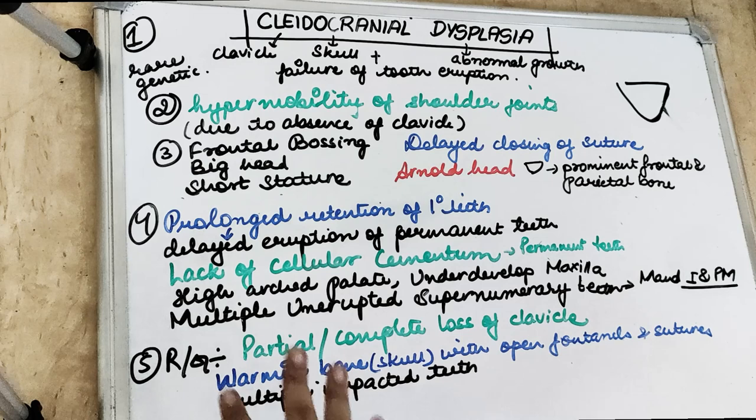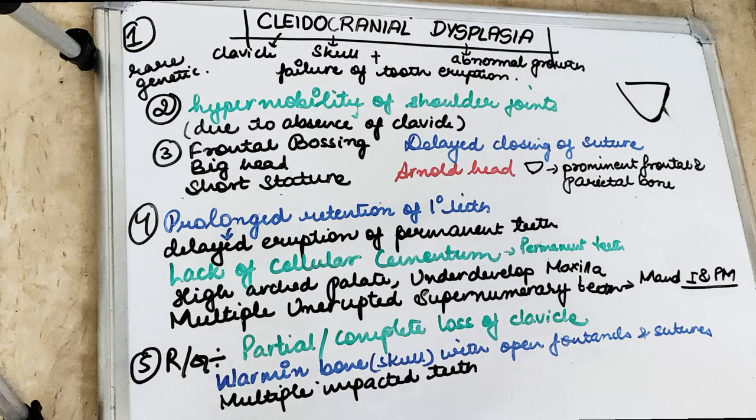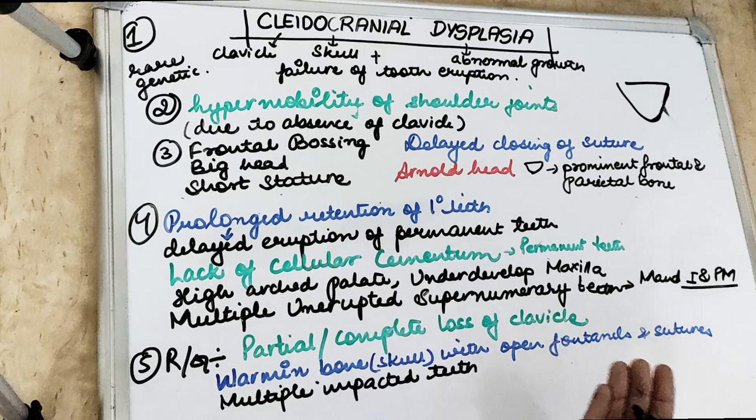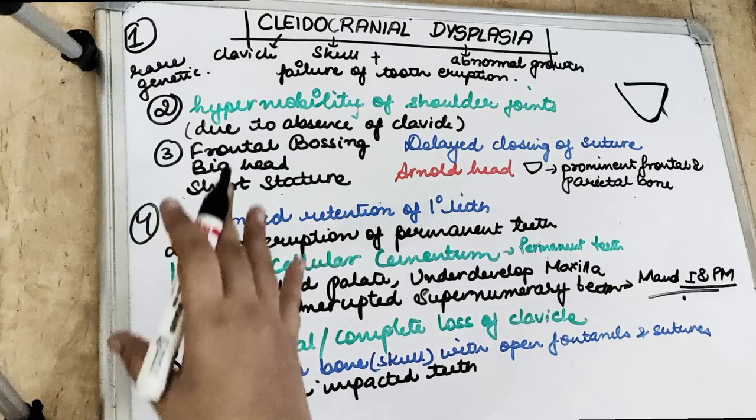The oral features include prolonged retention of primary teeth and delayed eruption of permanent teeth. The permanent teeth have lack of acellular cementum. There is a high-arched palate and underdeveloped maxilla. We also see unerupted supernumerary teeth in the mandibular incisor and mandibular premolar region. In radiographs, we see either complete or partial absence of the clavicles.